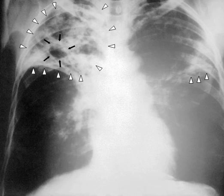Macrophages identify the bacterium as foreign and attempt to eliminate it by phagocytosis. During this process, the bacterium is enveloped by the macrophage and stored temporarily in a membrane-bound vesicle called a phagosome. The phagosome then combines with a lysosome to create a phagolysosome. In the phagolysosome, the cell attempts to use reactive oxygen species and acid to kill the bacterium. However, M. tuberculosis has a thick, waxy mycolic acid capsule that protects it from these toxic substances. M. tuberculosis is able to reproduce inside the macrophage and will eventually kill the immune cell.